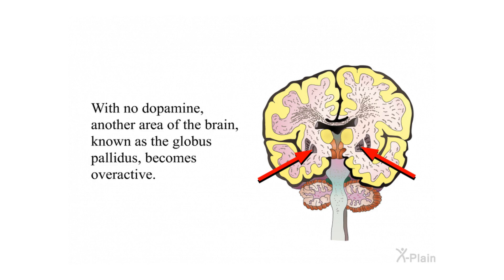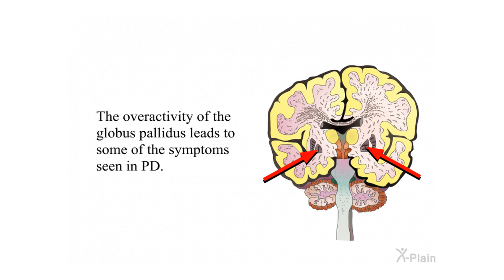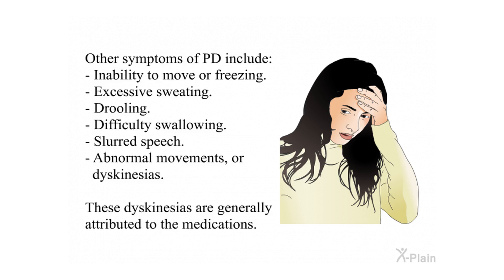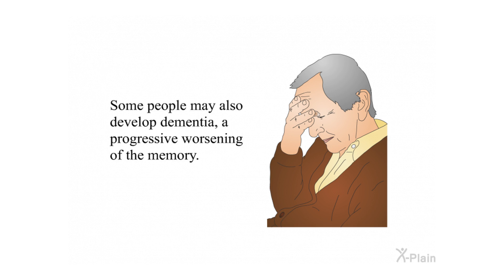With no dopamine, another area of the brain known as the globus pallidus becomes overactive. The overactivity of the globus pallidus leads to some of the symptoms seen in PD. Some of the symptoms of Parkinson's disease are increased stiffness, slowing of movements, and tremors. Other symptoms include inability to move or freezing, excessive sweating, drooling, difficulty swallowing, slurred speech, and abnormal movements or dyskinesias, which are generally attributed to the medications. Some people may also develop dementia, a progressive worsening of memory.